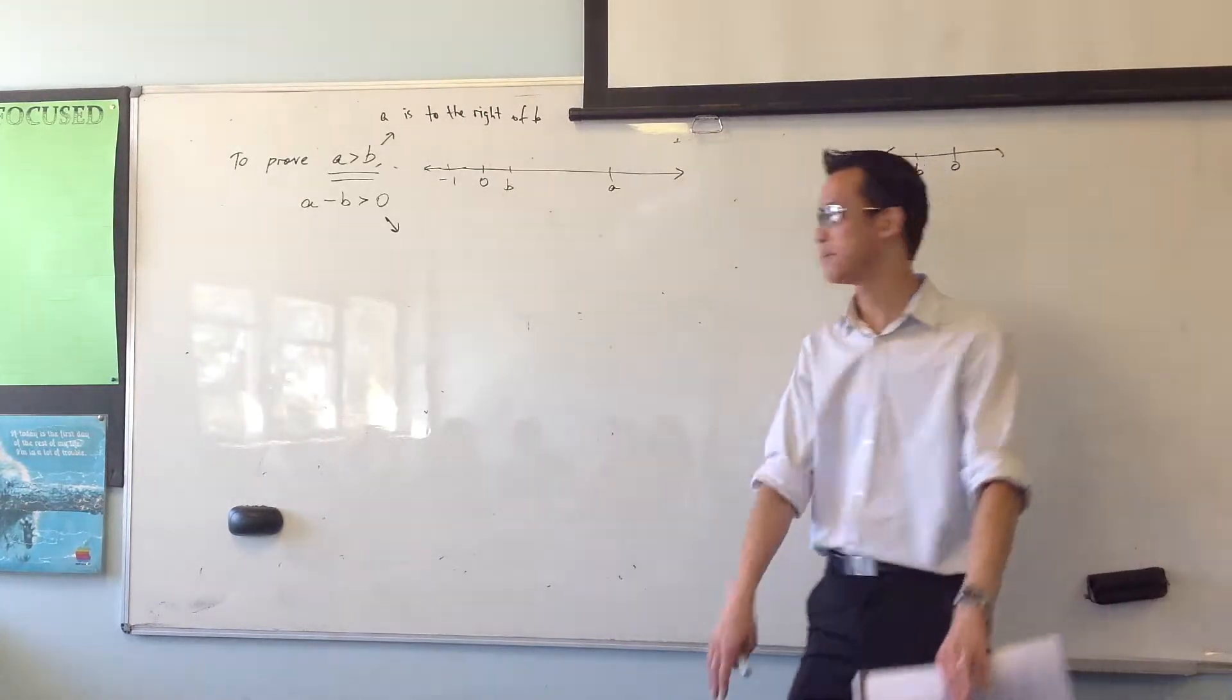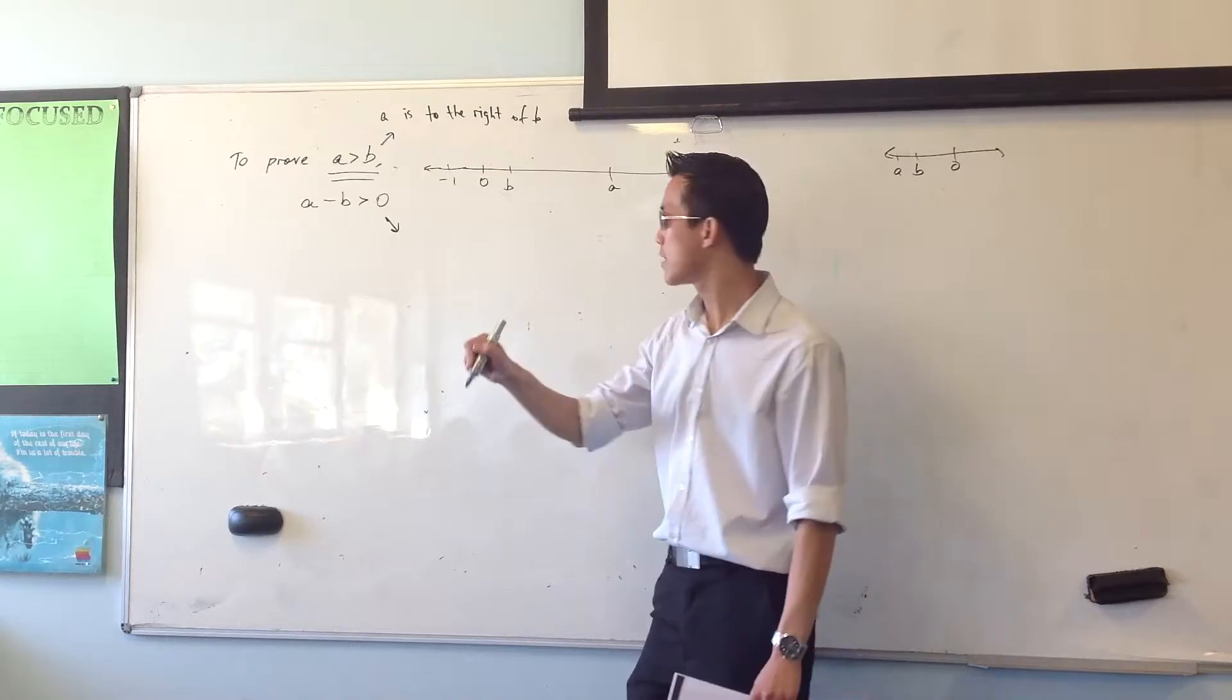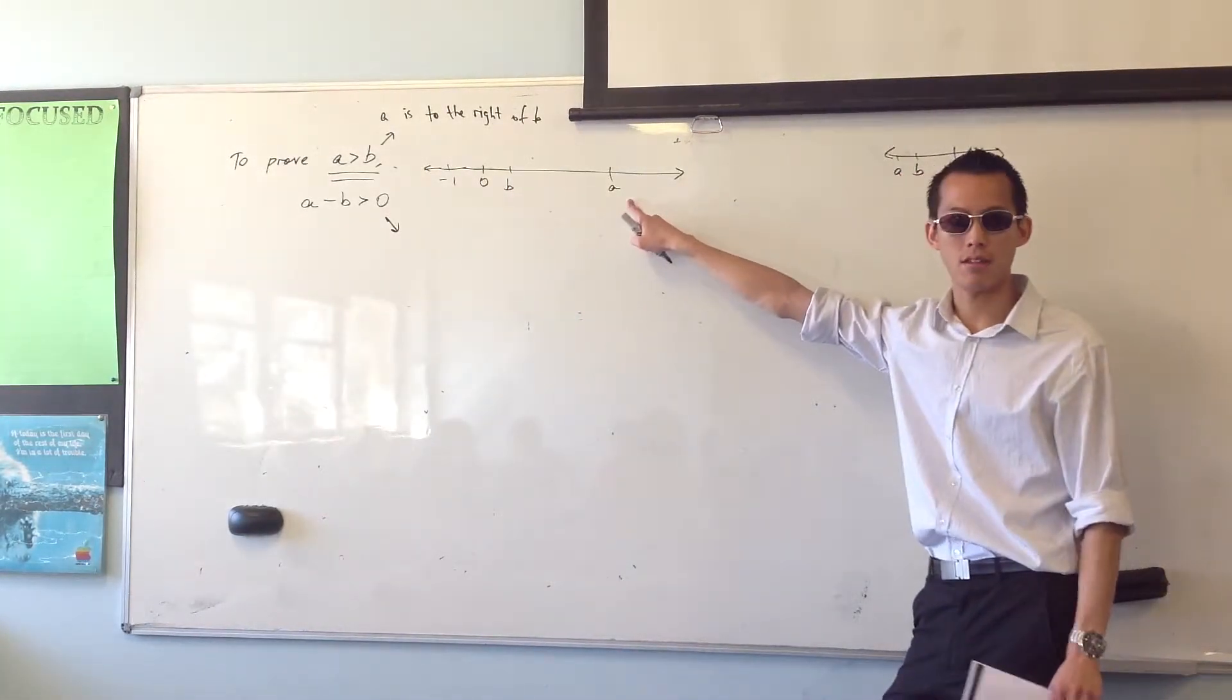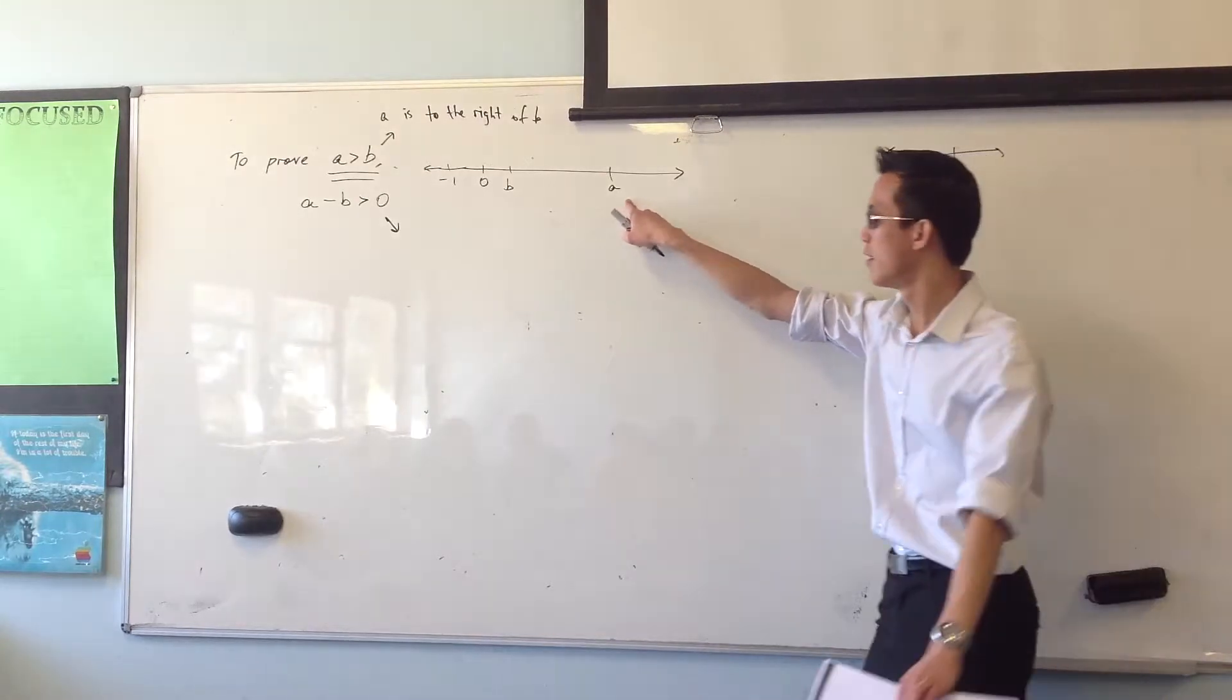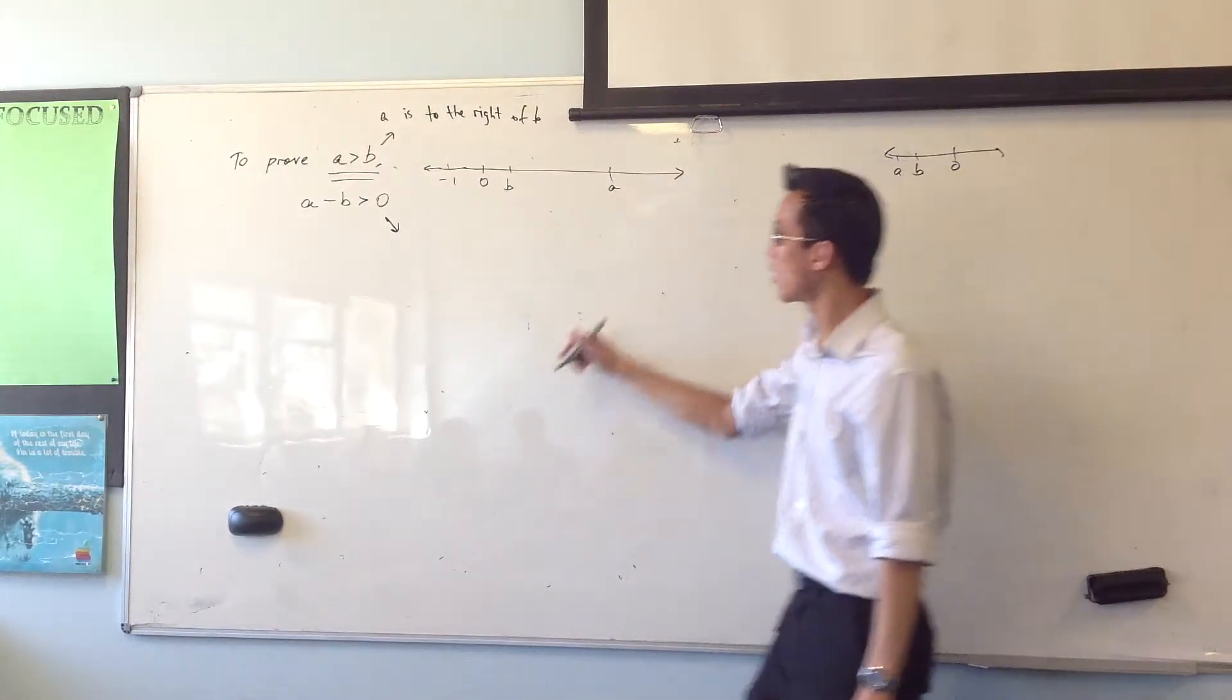Here's the way I would say it. A minus b, what does it represent? It represents a distance. Okay? It represents how far I have to go from b to a, not vice versa. Mark that. It's the distance from b to a. Okay?